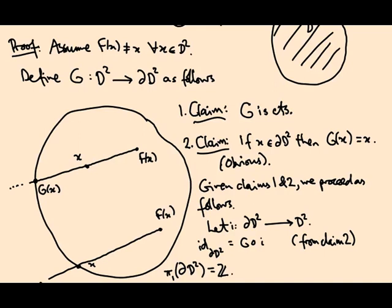Coming back, what do we still have to do? We have to check these claims. I've already told you the second claim is clear. The first claim needs to be proven. Well, the easiest way I know how to do this, proving that G is continuous, is just write down G explicitly in coordinates and check that it's continuous.